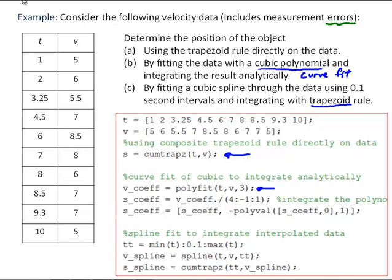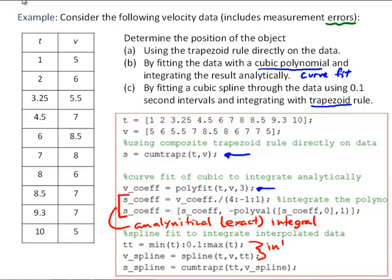Here's an M-file to do this calculation. To integrate with TRAPZ directly, we use QMTRAPZ. Then we use polyfit to do a curve fit with a cubic polynomial. The next two commands calculate the analytical integral of that cubic polynomial — I'd like you to work through those two commands by hand to make sure you understand how they calculate that integral. The spline fit is the last method, where we first generate interpolated data and then use QMTRAPZ to integrate that interpolation.